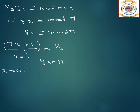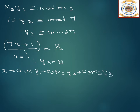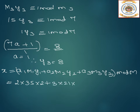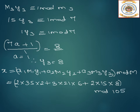Now substituting for x. The formula is: x = a1·M1·y1 + a2·M2·y2 + a3·M3·y3, all mod capital M. Substituting: 2 into 35 into 2 plus 3 into 21 into 6 plus 2 into 15 into 8, all mod 105. We get 758 mod 105. Taking the modulus, we get 23 mod 105.